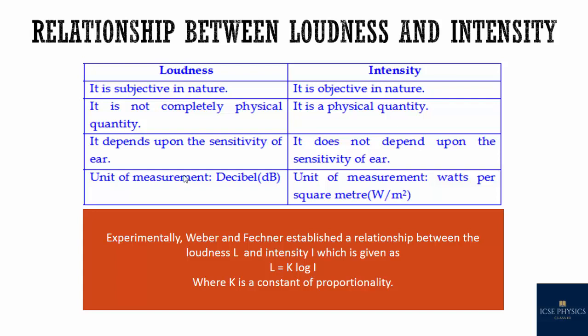Loudness is not a completely physical quantity; intensity is a physical quantity. Loudness depends upon the sensitivity of the ear; intensity does not. The unit of loudness is decibel and for intensity it is watts per square meter. The relationship between them is: loudness = k × log(I), where k is a constant of proportionality and I is the intensity of the sound.